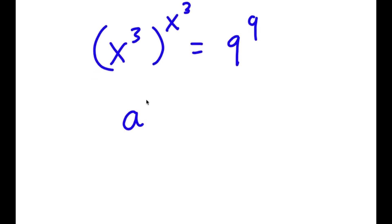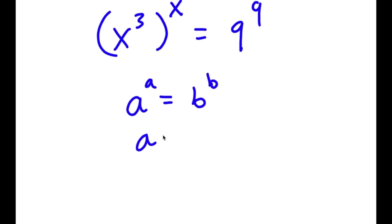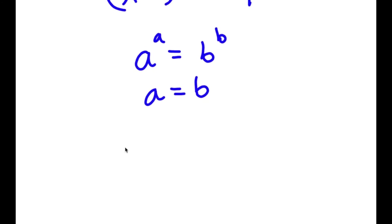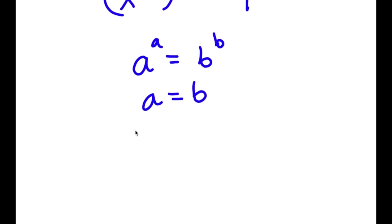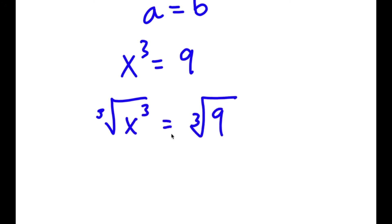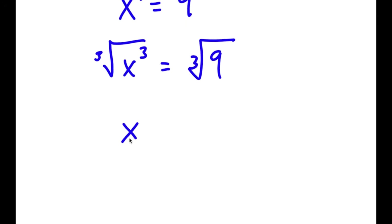Now if I have something in the form a to the power of a equals b to the power of b, this means a equals b. So x to the power of 3 is equal to 9. To solve this, I take the cube root on both sides. The cube root of x to the power of 3 equals x, so x is equal to the cube root of 9.